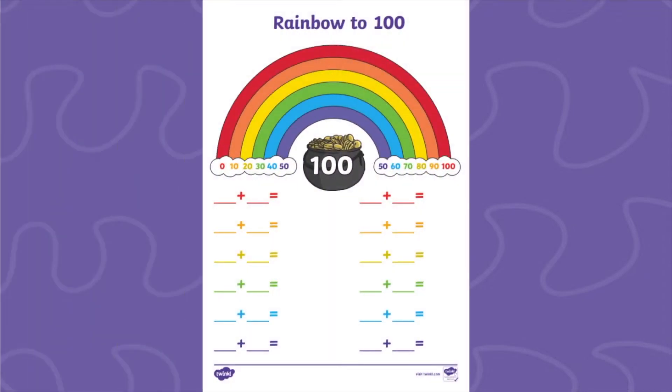When you download this resource from our website, it will download as this colorful and interactive worksheet. All your children need to do is follow a particular color on the rainbow to find which two numbers match to make a number bond to 100. They can then write this number sentence beneath the rainbow.